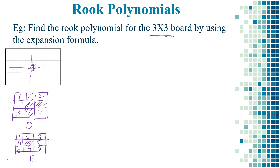Now we find the rook polynomial separately for each board. For board D, R1 equals 4 because there are 4 squares available to position the rooks. For R2, the placement of two rooks: the first rook on square 1 and the second on square 4 gives ordered pair (1,4), and similarly (2,3).